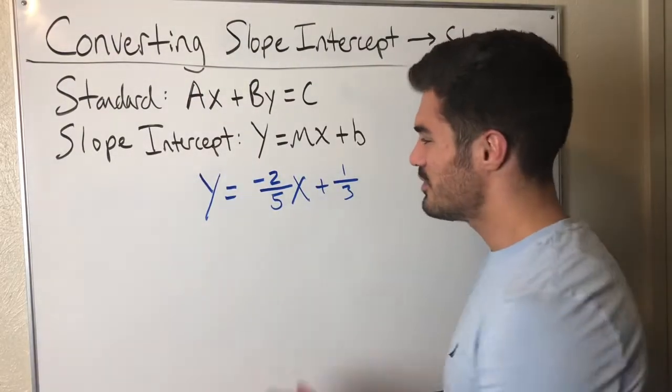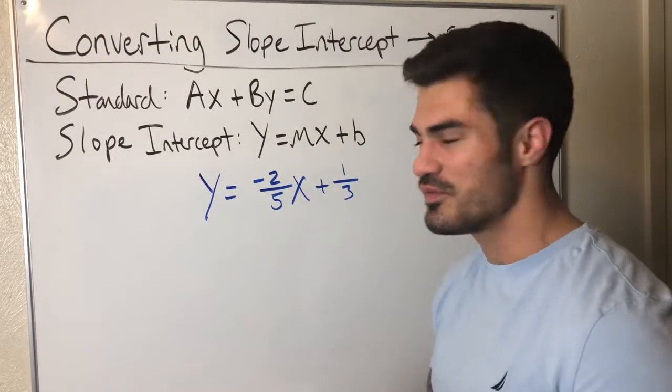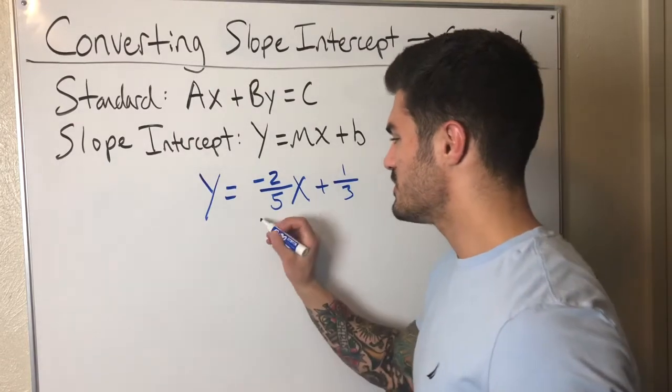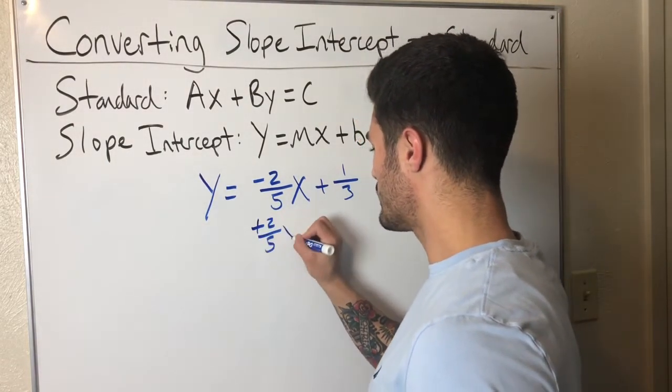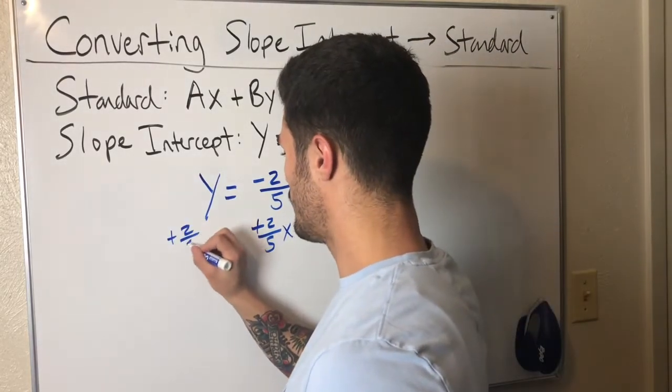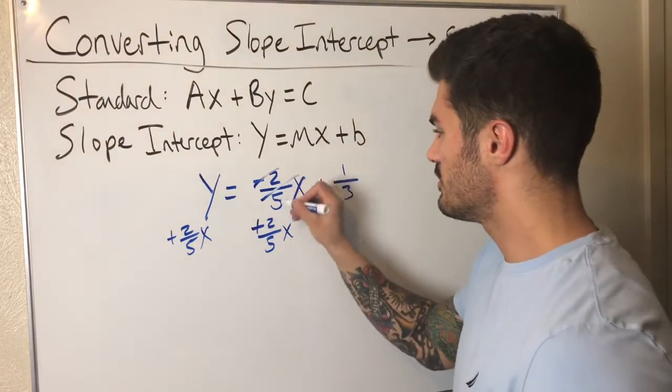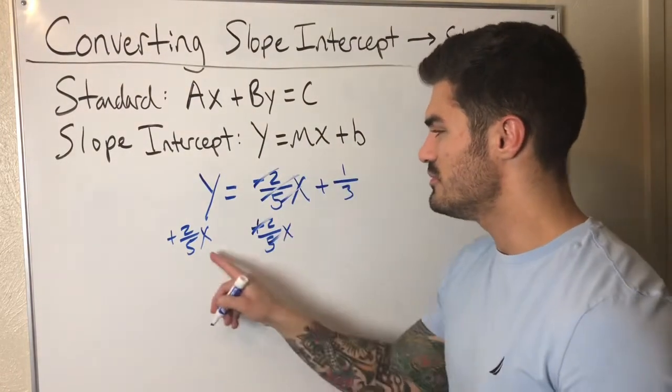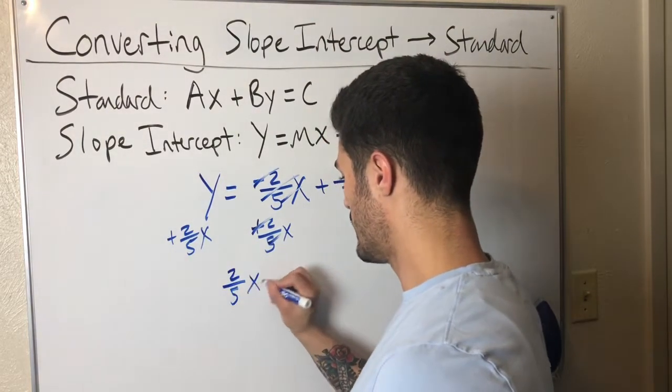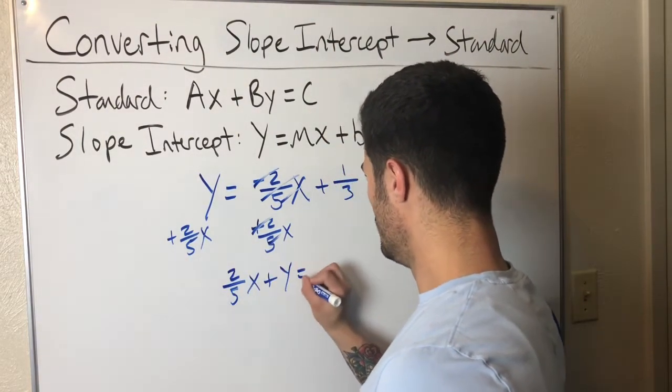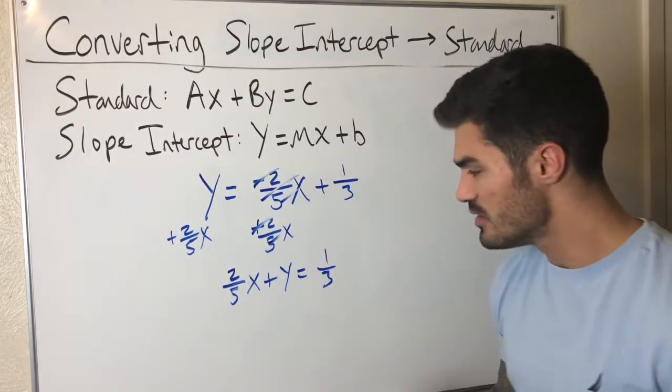Same as the last example. I'm moving the x over with the y and then I'm going to see what I can multiply both sides by to get rid of the fraction. So first things first, I'll add plus two over five x to both sides, plus two over five x. That gets rid of this x. Now the x is over here with the y, which is where I want it. Two fifths x plus y equals one third. The one third is still over here.